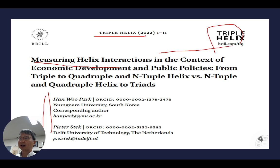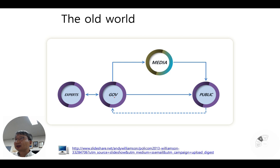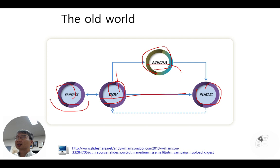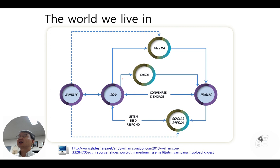In the past, there was the government, experts like me or like you, and then the public. Media was in between the government and the public. Of course, government can communicate with the public directly, and experts consult for the government. But the media still exists. However, there is another new media — we call it social media.